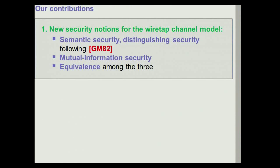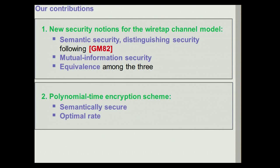Our first contribution is to give proper security definitions for the wiretap channel model based on semantic security — what we use in cryptography — and also definitions based on information-theoretic quantities, and to show them equivalent. With respect to schemes, we provide a quite general paradigm to construct encryption schemes for the wiretap channel model that are polynomial time in encrypting and decrypting, are semantically secure, and can be instantiated to achieve optimal rate in many settings.